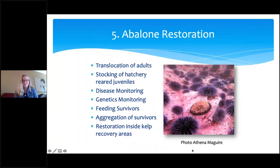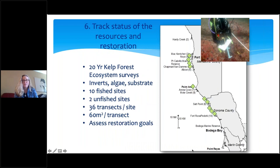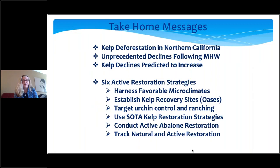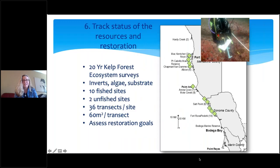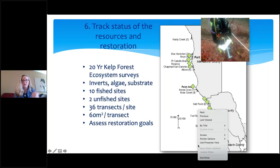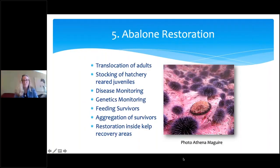We're going to think about what to do with starving urchins — a creative solution is ranching sea urchins: feeding them to produce a sustainable seafood product, which can help restore the ecosystem. Feeding trials at the Bodega Marine Lab and San Diego State University have been very successful. We're also going to need to help restore red abalone, including translocation of adults, keeping track of disease, feeding survivors, and restoring kelp — that's a key feature for helping these species survive this climate disaster.